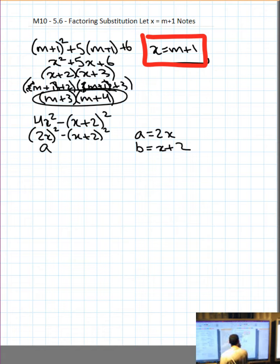Then I'm going to put a in for 2x squared, and put b in for x plus 2 squared. Then I'm going to factor it, the difference of squares, a plus b, a minus b. Then I'm going to carefully put 2x and x plus 2 back in for a and b, substituting with brackets.